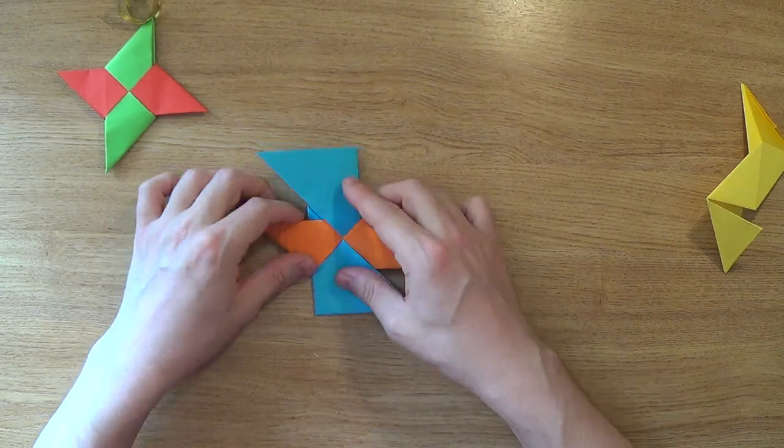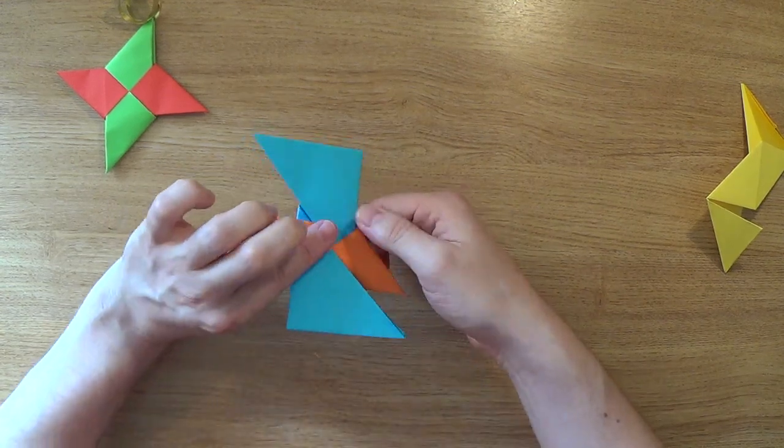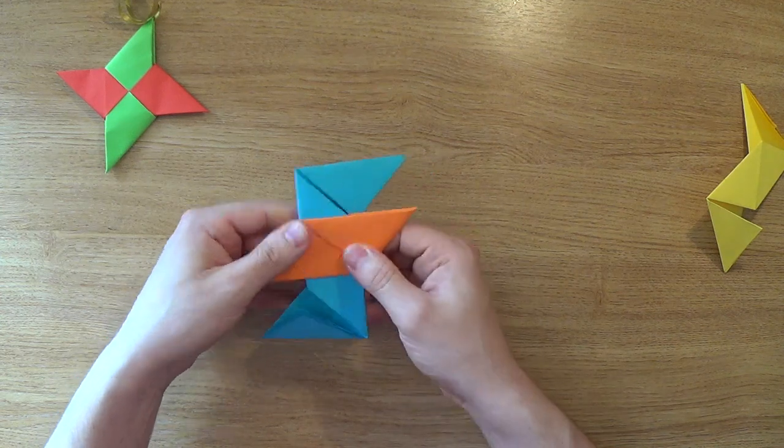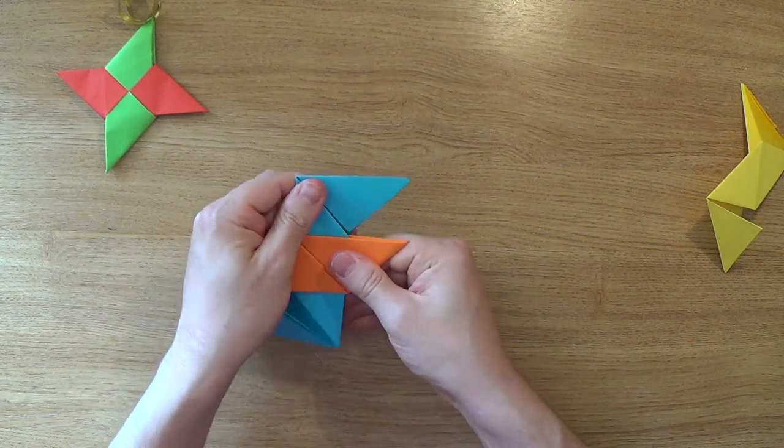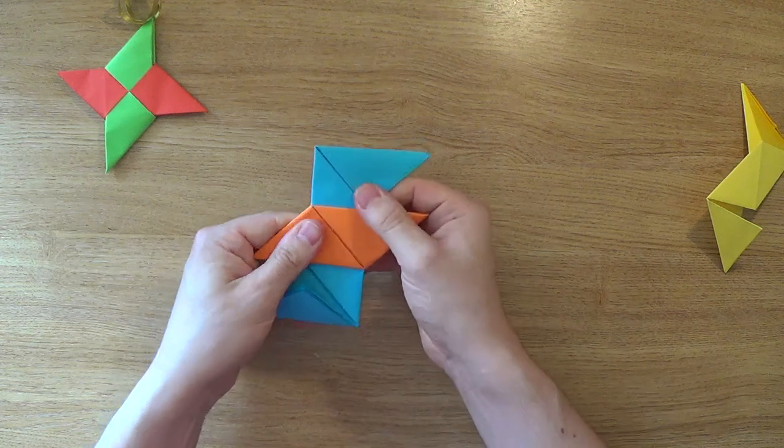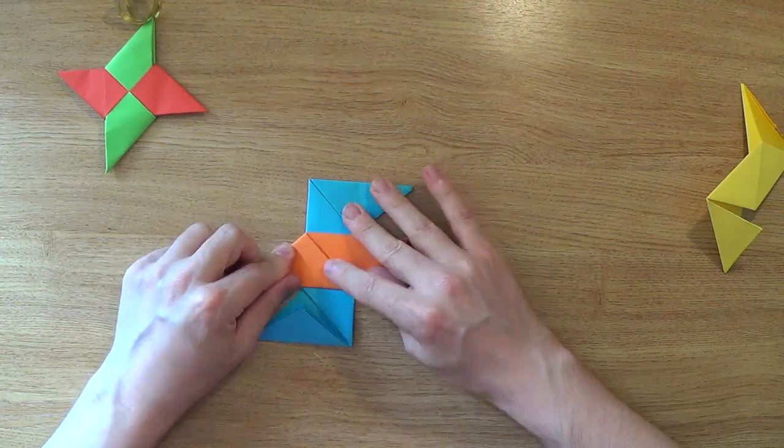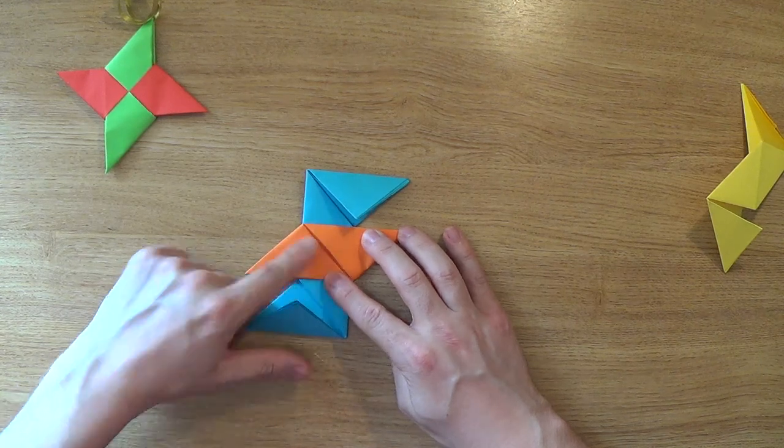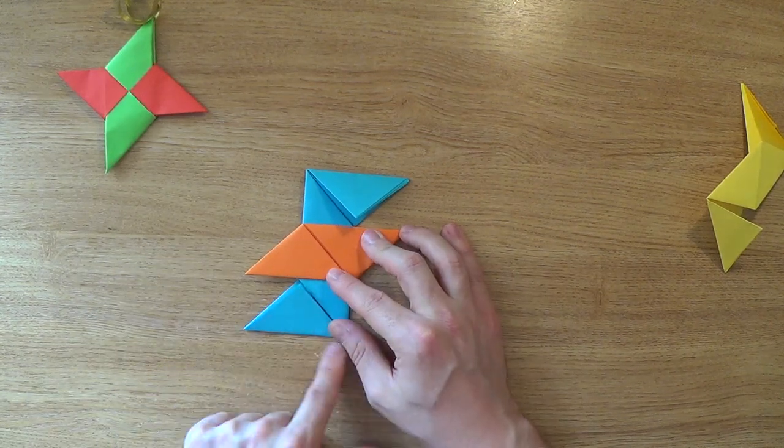It should start to hold itself together a little bit. Now we'll turn the whole thing over, a little bit of a wiggle to make sure that's in the middle. And now we're going to do the same thing again. So you can see we've got our two flaps that we're going to tuck into and we've got our triangle here.